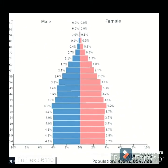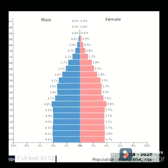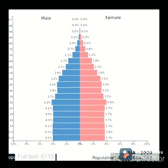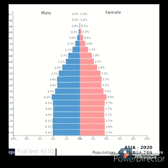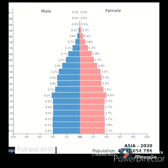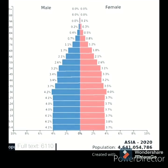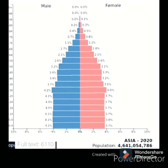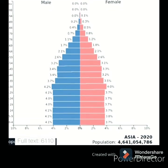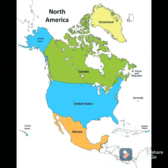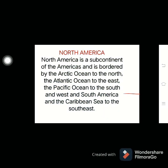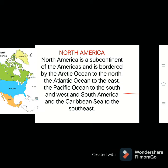As we can see here is the pyramid about the age of male and female. There are differences between their ages, and this image represents the percent of people who are at each age group. Now let's proceed to North America.